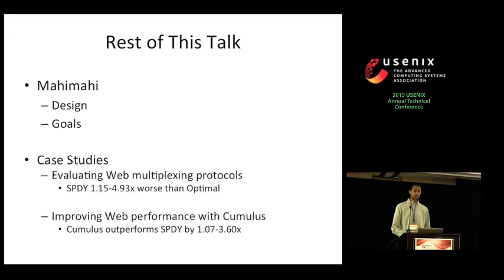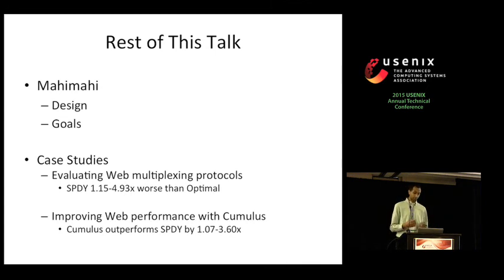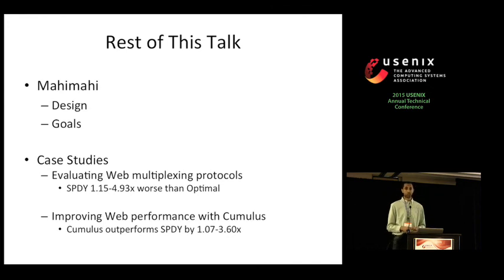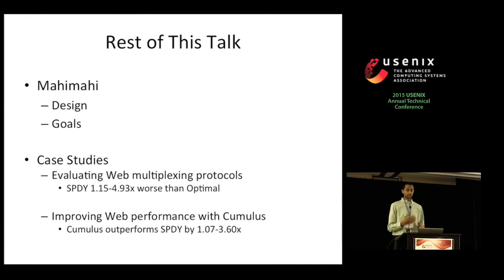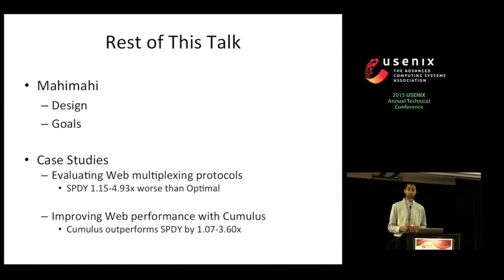In the rest of this talk, I'll first describe each of MahiMahi's components and explain how they collectively achieve these three goals. Then I'll switch gears and talk about several case studies: first, evaluating existing and emerging web multiplexing protocols over a variety of configurations, and then a new system called Cumulus, whose main goal is to improve web performance over long-delay links.